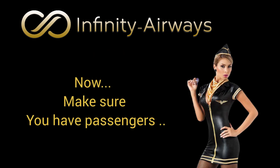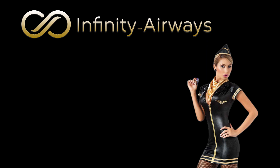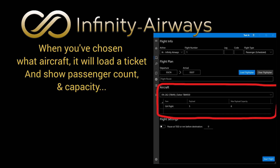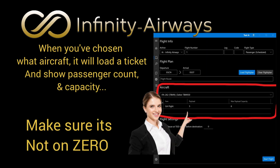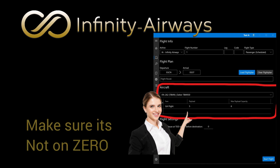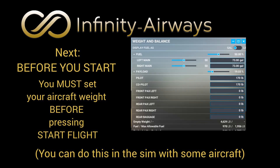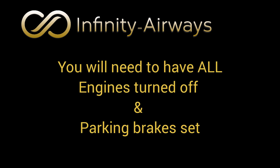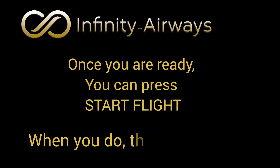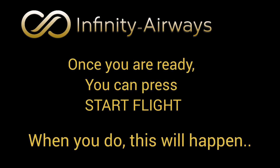Now, let's make sure we have passengers on this flight. When you've chosen your aircraft, it will load a ticket and show passenger count and capacity. Make sure this is not on zero. Before you start, you must set your aircraft weight before pressing Start Flight. You'll also need both engines turned off and the parking brake on. Once you're ready, you can press Start Flying.